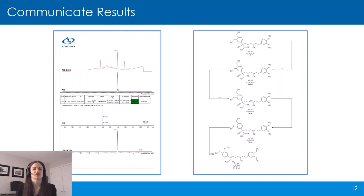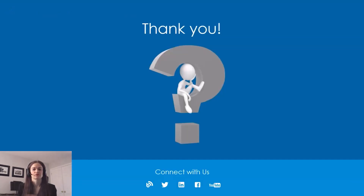Finally, similar to what I mentioned for optimizing your chromatographic methods, we have customizable reports and databases where you can store this information, so that you can easily communicate your results. Just to summarize today: we looked at ways that software can help for impurity studies — one being the development of a robust chromatographic method with good separation of peaks, and the second being identification of impurities using accurate mass or tandem MS and a variety of other software tools. Thanks for your time.